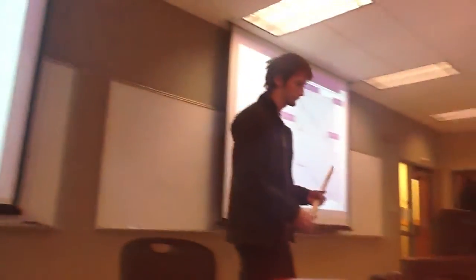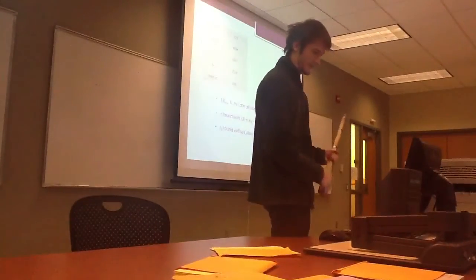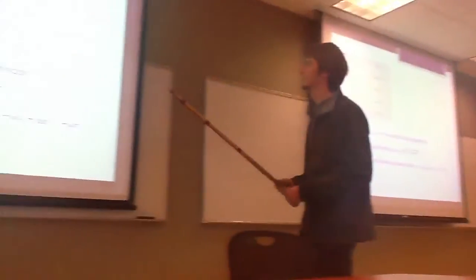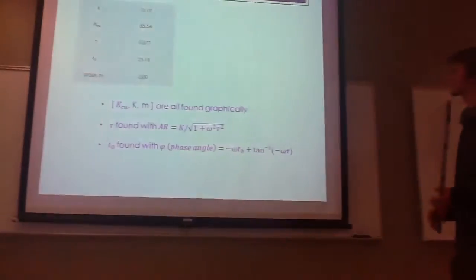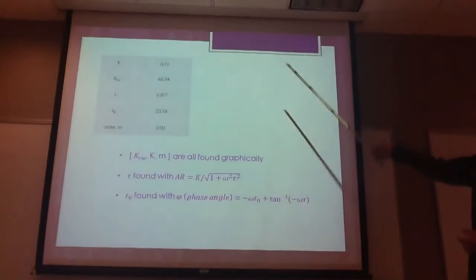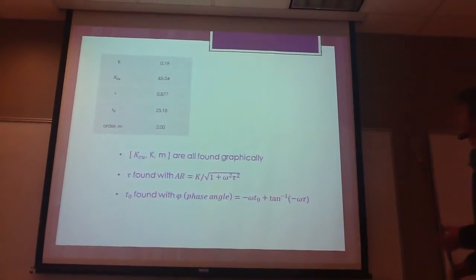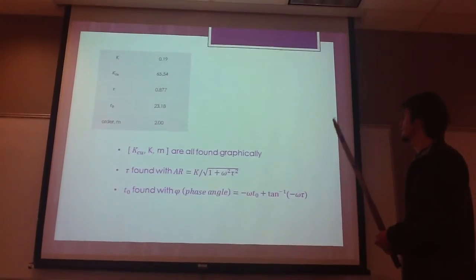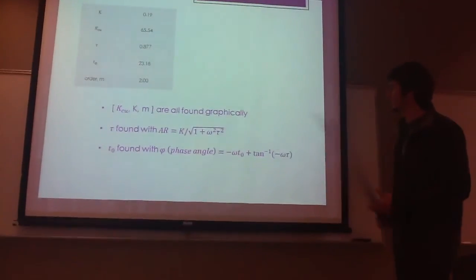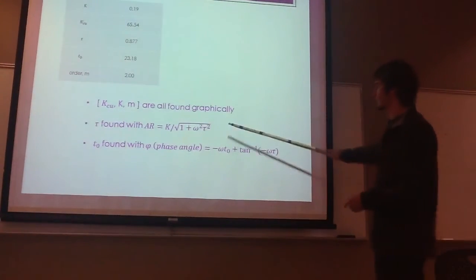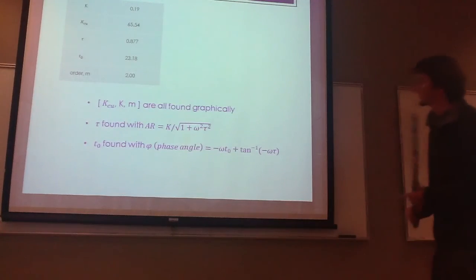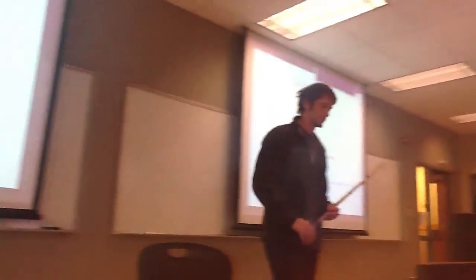Here's the final constants for mid-range, and we have the gain of 0.19, KCU, and tau, and the dead time. And the order equals 2. And these are the equations we used to find that time and tau. And that is it.